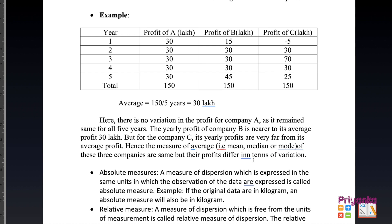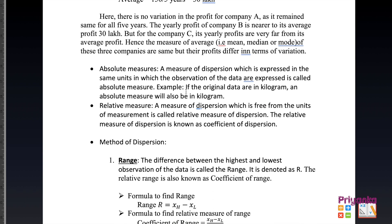In this chapter we will find two measures: absolute measure and relative measure. An absolute measure of dispersion is expressed in the same unit as the observations — for example, if data is in kilograms, the absolute measure will also be in kilograms. A relative measure of dispersion is free from units of measurement and is called the coefficient of dispersion.